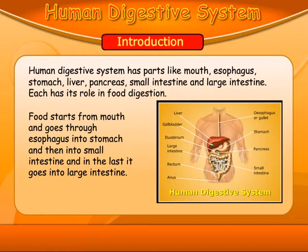Food starts from the mouth, and goes through the oesophagus into the stomach, and then into the small intestine, and finally it goes into the large intestine.